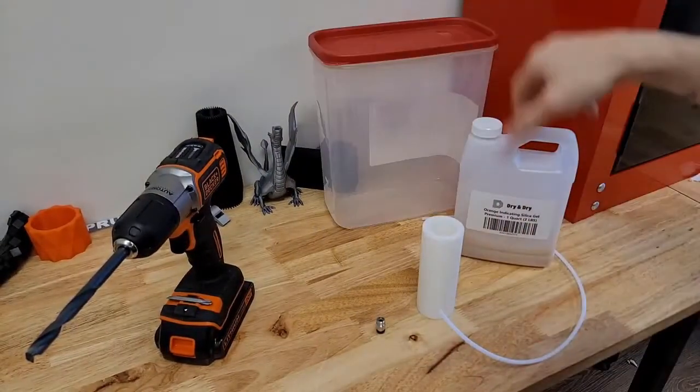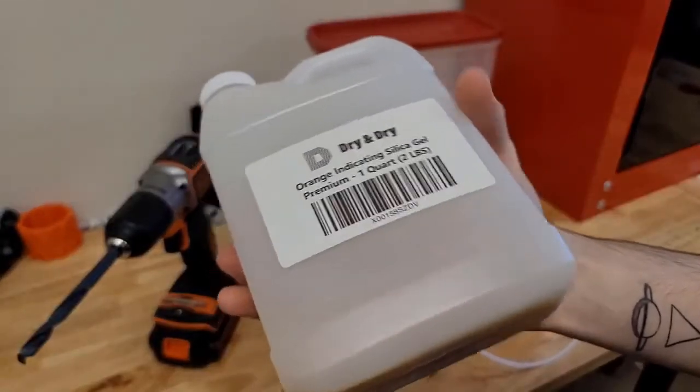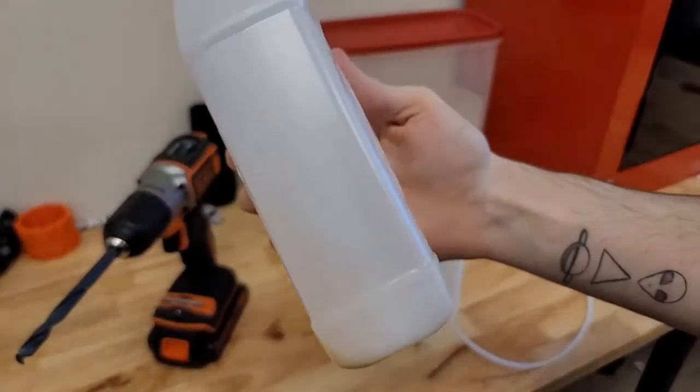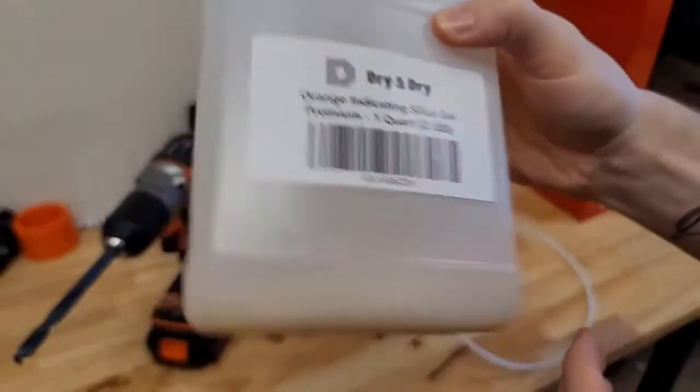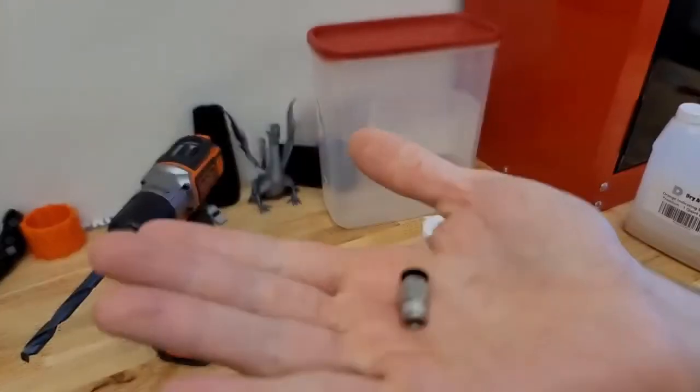It just needs to be something real simple that will have a seal on it. Then you're going to need these silica dry beads. I got these off Amazon. They're reusable if you put them back in the oven and dry them out. They're pretty cheap and you can get a lot of them.